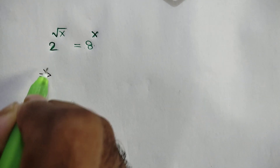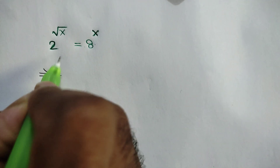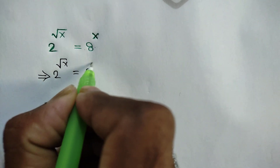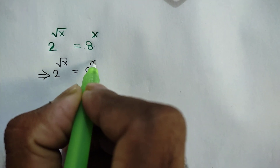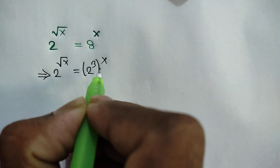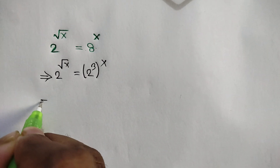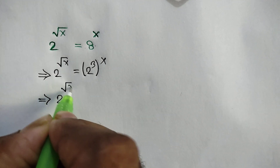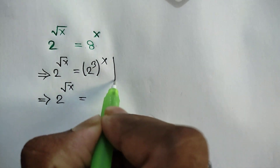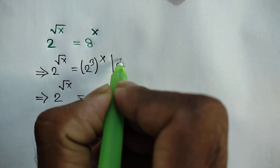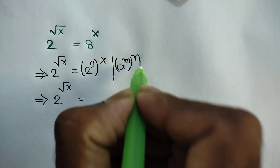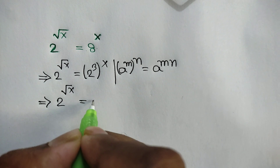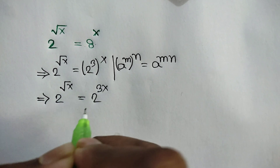At first, we can write 2 to the power square root of x is equal to — here we can write 2 cube, because 2 cube is the same as 8. We can write whole power x. Now, applying the rule that a to the power m, whole power n, is equal to a to the power mn, we can write 2 to the power 3x.